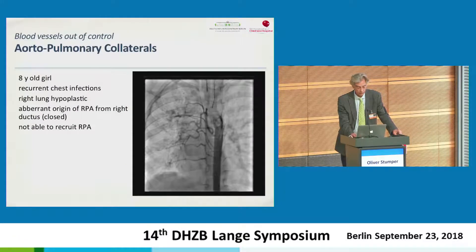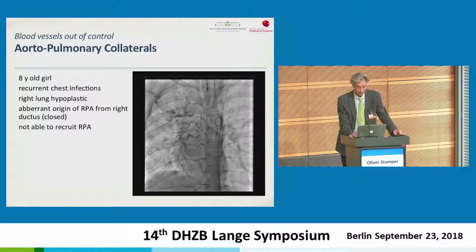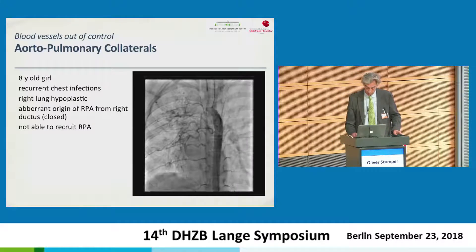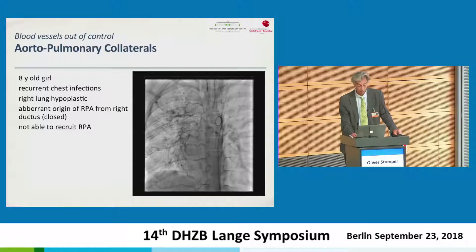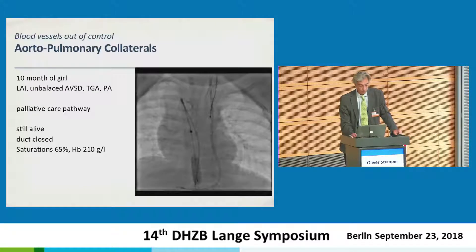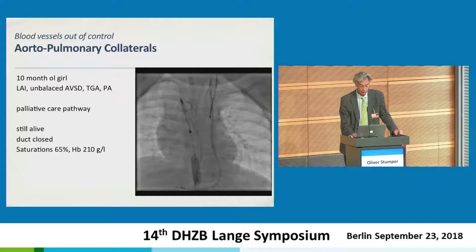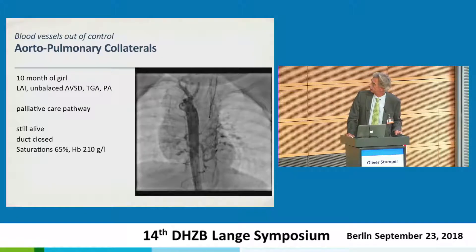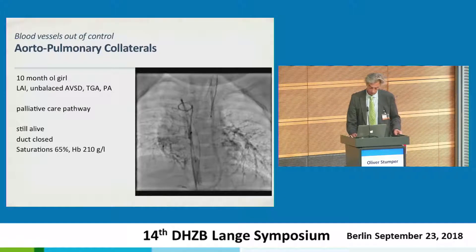Another example: a girl with recurrent chest infections, right lung hypoplasia, and an aberrant origin of the right pulmonary artery from the ductus which is now closed. You see the engorgement and enlargement of these very tortuous bronchial arteries trying to keep the right lung alive and perfused. Another example — a 10-month-old girl on a palliative care pathway, left HR isomerism. The ductus closed, saturation 65%, hemoglobin 210. She's alive because of all these tortuous vessels forming from the descending aorta — bronchial arteries supplying blood to the lung.